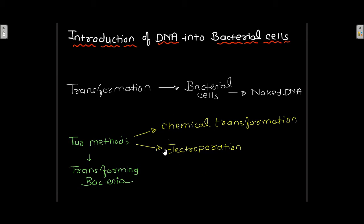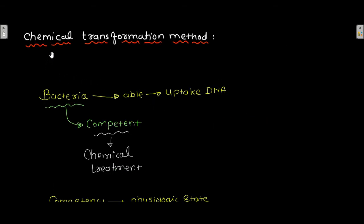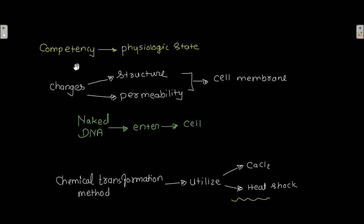Now let's discuss chemical transformation. Bacteria which are able to uptake DNA are known as competent bacteria. Bacteria are made competent by chemical treatment — you treat the bacteria with certain chemicals and after that the bacteria becomes able to uptake DNA.